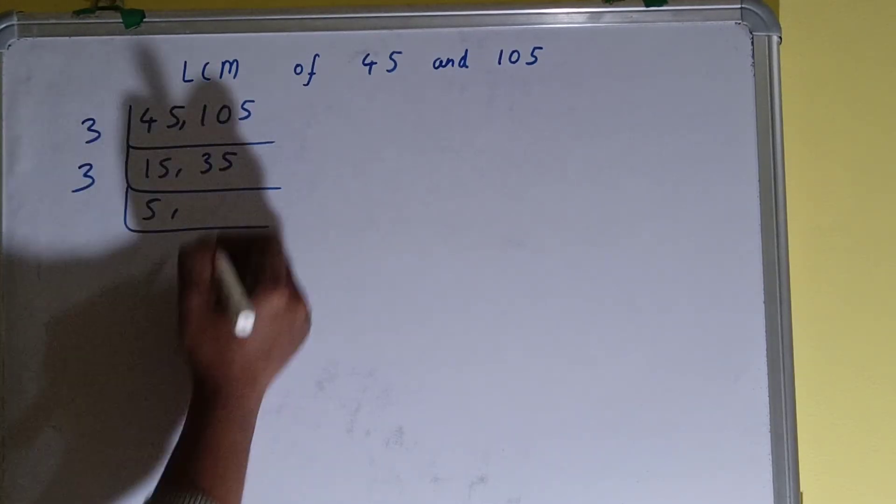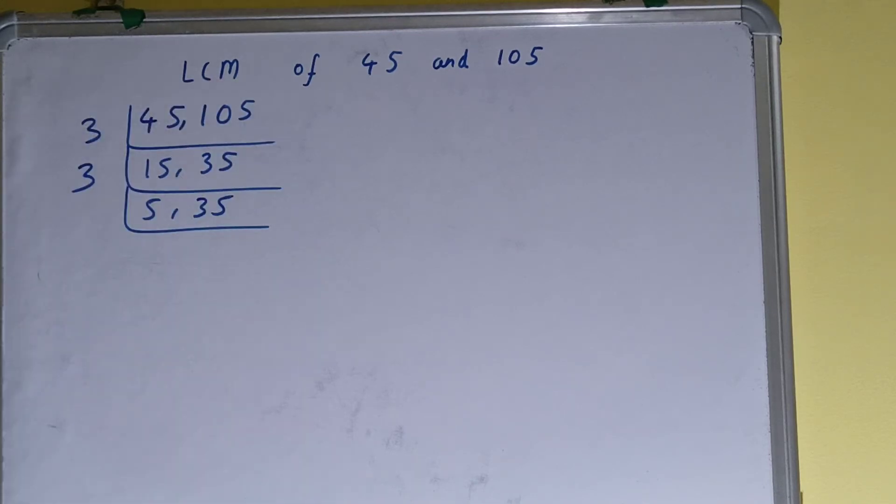Okay, now again we'll check, is any of the numbers divisible by 3? Then none of the numbers. So we'll go to the next lowest prime number, that is 5. And if we check, both the numbers can be divided by 5.